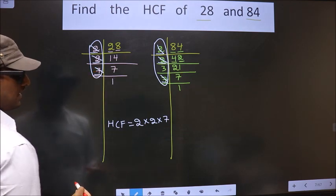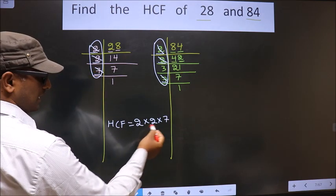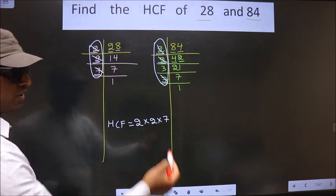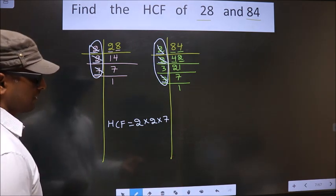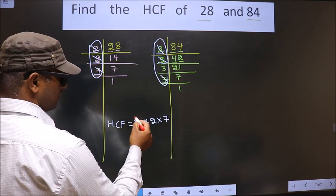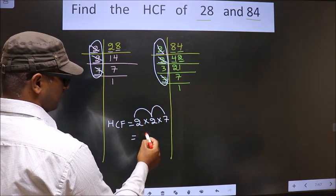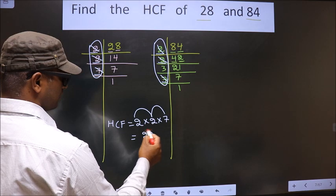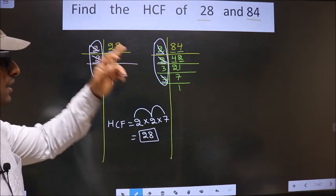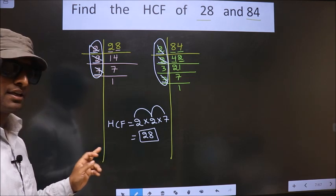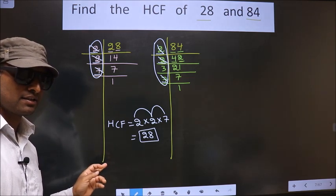No more numbers are left, so you multiply all these numbers. Whatever number you get, that is your HCF. That is 2 into 2 is 4, 4 into 7 is 28. So 28 is our HCF. Am I clear?